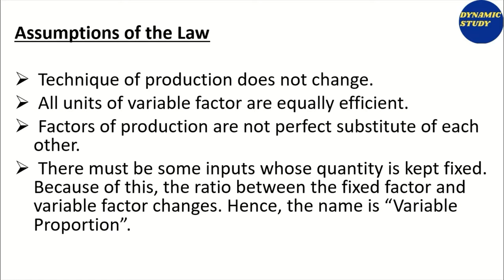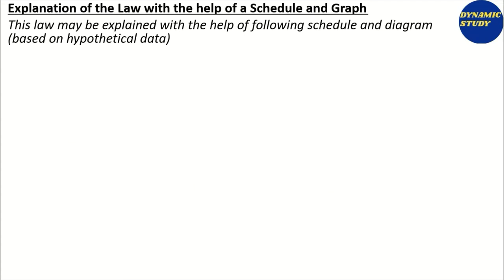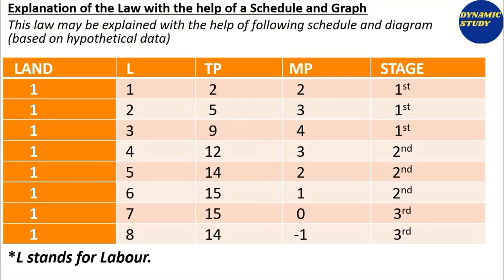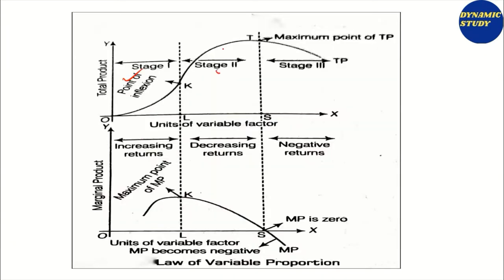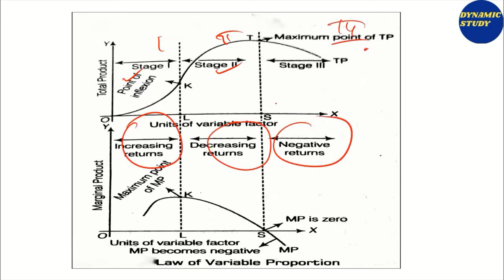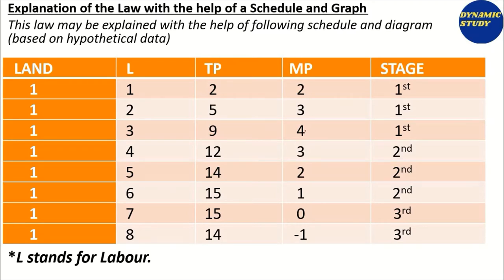This is why we call it variable proportion — because we do L by K, for example, fixed factor by variable factor. We can explain this with a graph and diagram as well, where there are three stages of production. Stage 1 is increasing returns, Stage 2 is decreasing returns, and Stage 3 is negative returns. Stage 1 ends when maximum marginal product is produced, and Stage 2 ends when marginal product becomes zero, after which we enter Stage 3.